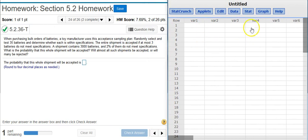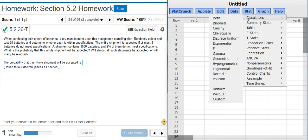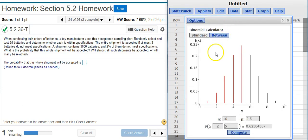Then inside StatCrunch, I'll go to Stat, Calculators, Binomial. Here in my binomial calculator, I need to add in the parameters of my distribution. The sample size is 35 batteries.